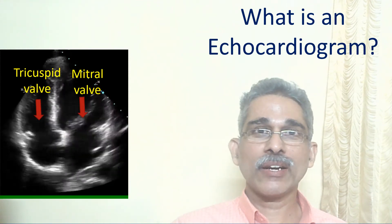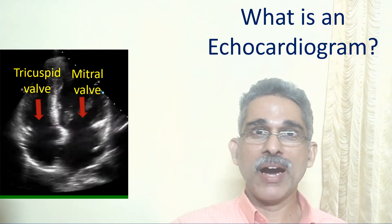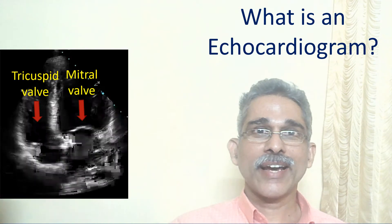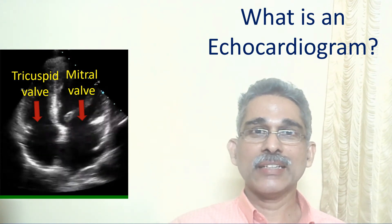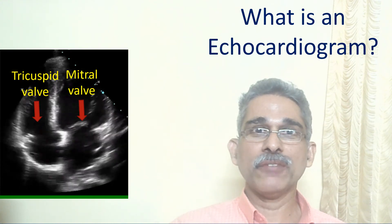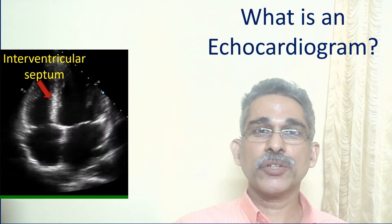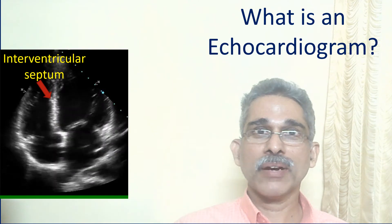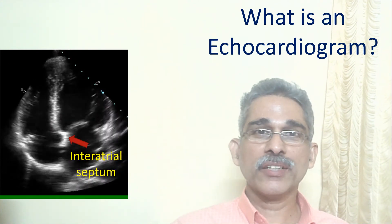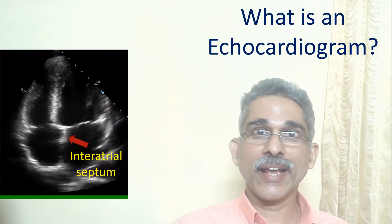Opening and closing of the tricuspid valve on the right side and the mitral valve on the left side have been marked here. The tricuspid valve is between the right atrium and right ventricle, and the mitral valve between the left atrium and left ventricle. The wall between the two lower chambers, the interventricular septum, has been marked. The wall between the two upper chambers is known as the interatrial septum.